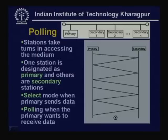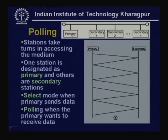Whenever the primary wants to send data to one of the secondaries, it uses select mode: the primary selects a particular secondary by sending its address, the secondary sends an acknowledgement, and then data transfer is performed. In the polling case, data comes from the secondary to the primary. The primary sends a polling signal to one of the secondaries, the secondary sends an acknowledgement, and then data transfer takes place.